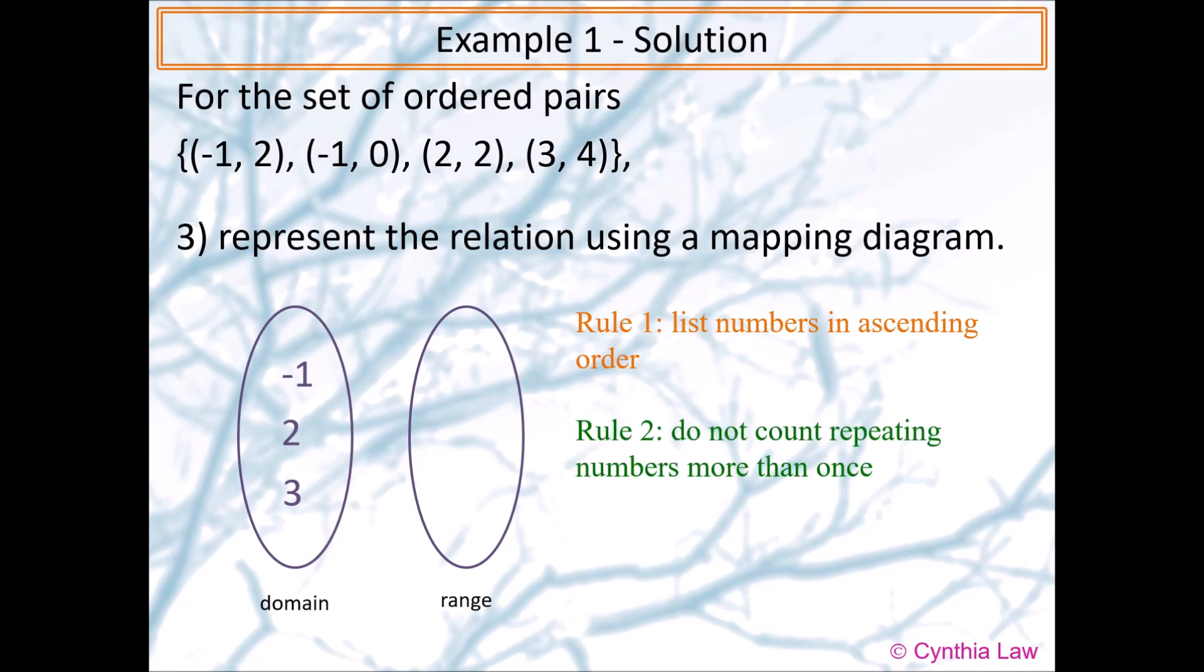So part 2 of the rules is that we do not count repeating numbers more than once. So negative 1 was repeated. However, in the domain we do not write it twice. We only write it once.